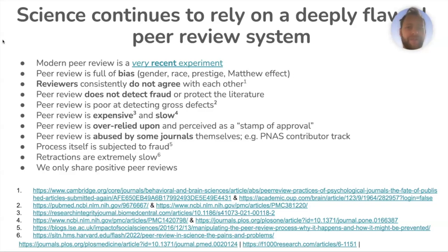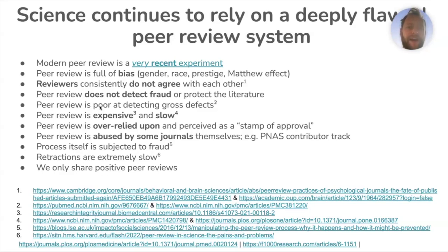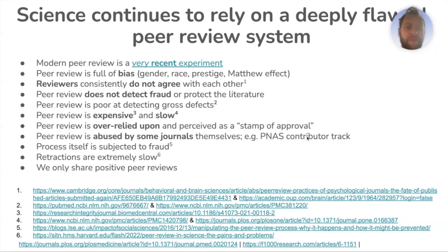Peer review is not as objective as we would like it to be. It does not detect fraud or protect the literature — and it's not designed to do that — but we often take peer-reviewed papers to mean they're reliable and trustworthy. Peer review is also very bad at detecting gross defects in a manuscript. It is expensive and slow, and it hampers science. Whether we like it or not, it is perceived as a stamp of approval and is over-relied upon by scientists, journalists, and the general public.